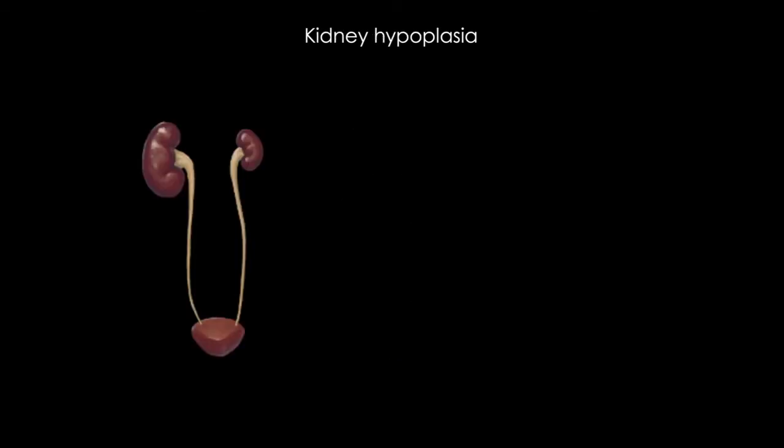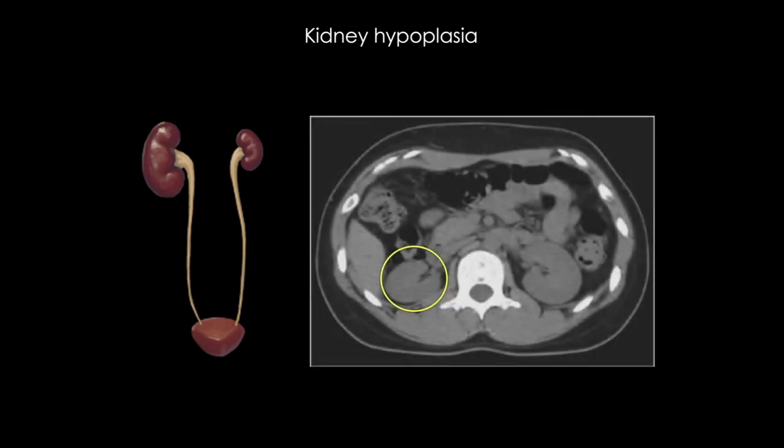In kidney hypoplasia, there's variable development of the kidney parenchyma and ureter structure. This kidney can be functional, but it's just reduced in size. In this CT scan, we see a small kidney that pretty much has normal proportions — and in fact, this was found incidentally with imaging.